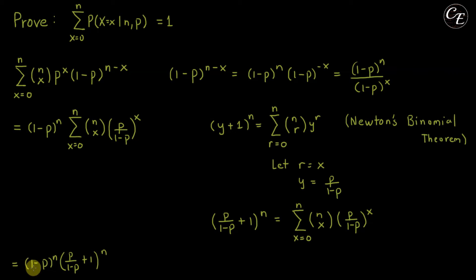Then we have here is equal to 1 minus p raised to n times p over 1 minus p plus 1 raised to n.